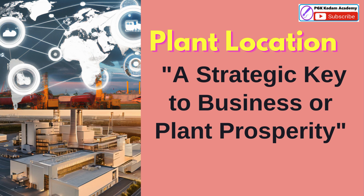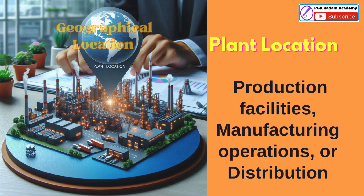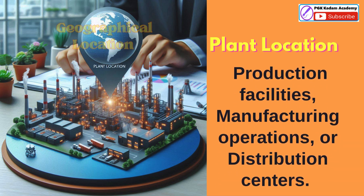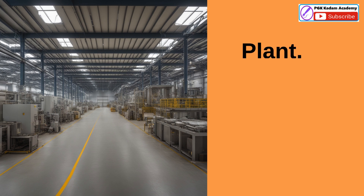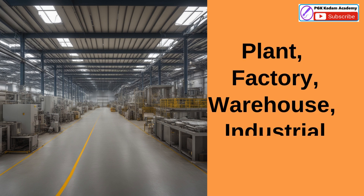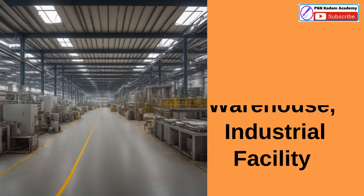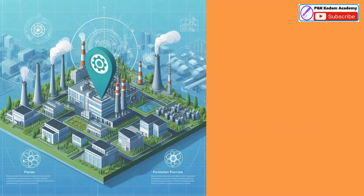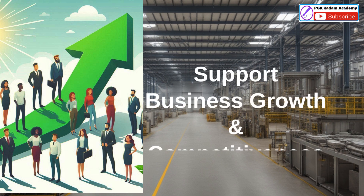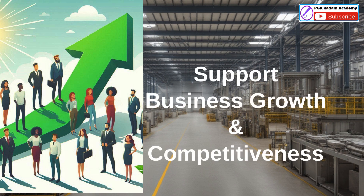Plant location refers to the geographical location where a company decides to set up its production facilities, manufacturing operations, or distribution centers. It is a strategic decision that involves selecting a site for a plant, factory, warehouse, or other industrial facility to produce goods or services. The goal of plant location planning is to find a location that optimizes various factors to support business growth and competitiveness.